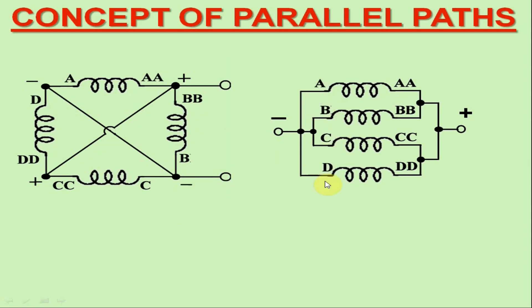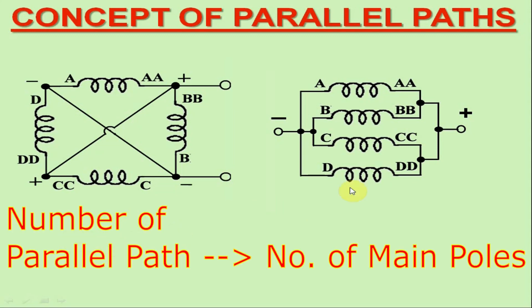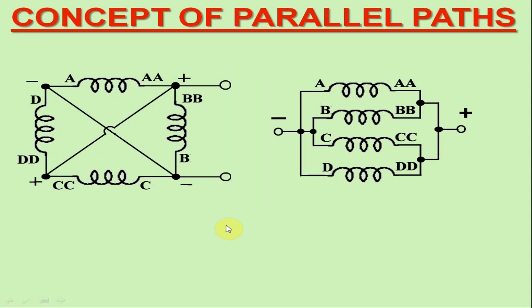So in lap winding case, we may state that the number of parallel paths is always equal to the number of machine poles and total armature current is equally divided among parallel paths.